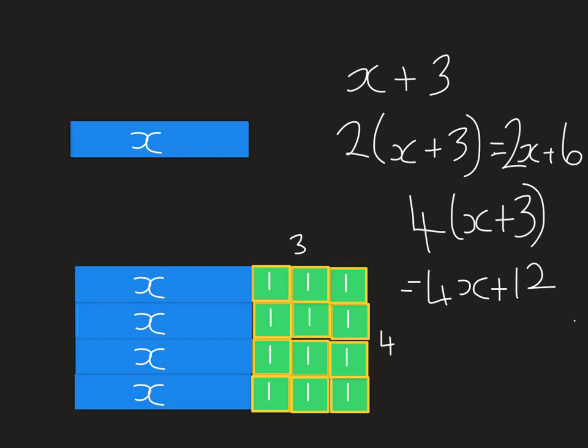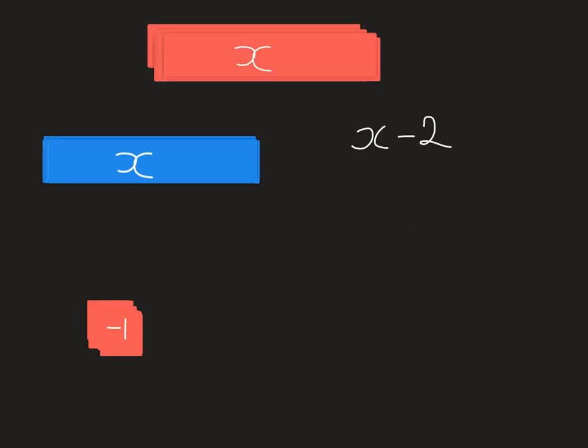We're just going to have a little look at some negatives now. They're done in a very similar way. The only thing is, you're going to turn your algebra tiles to face the other way, to face the red way.